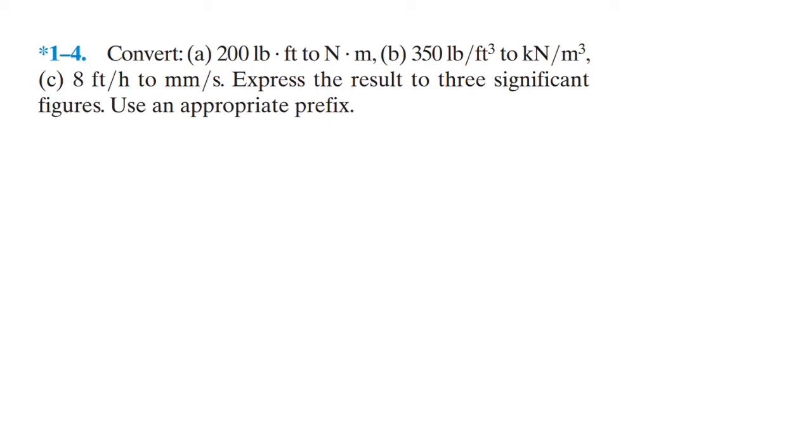Convert 200 pound-foot to newton-meters, 350 pound per foot cubed to kilonewton per meter cubed, and 8 feet per hour to millimeters per second.